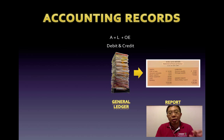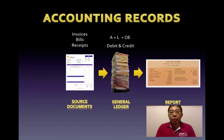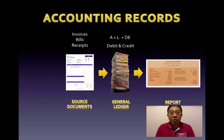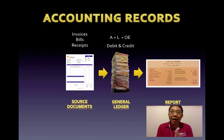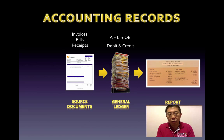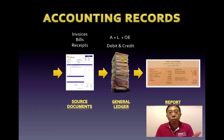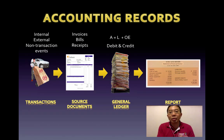Every transaction that we record must be a real transaction — it must be supported, verified, and evidenced by some sort of source document. You cannot record transactions out of thin air. These supporting documents are called source documents. Examples include invoices, bills, receipts, and checks that we issue — anything that documents the amount and nature of the transaction. The source document must represent what really happened, as real transactions occur hundreds and thousands of times every day in a business.